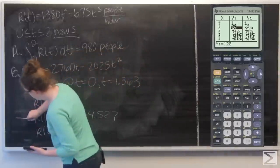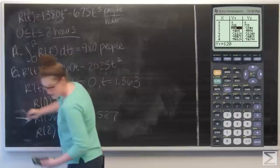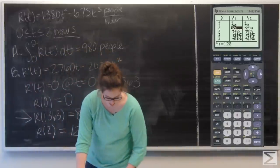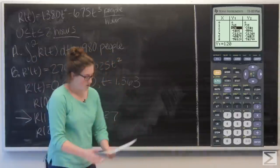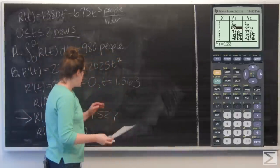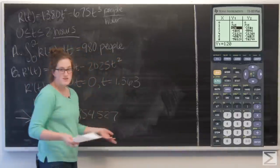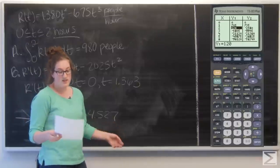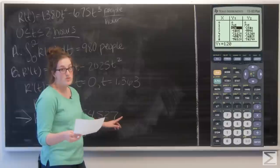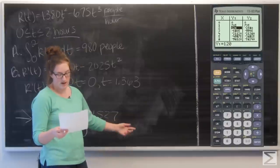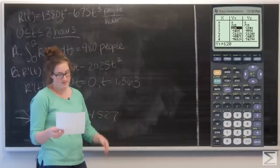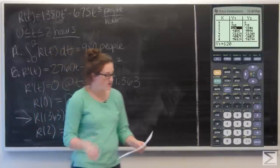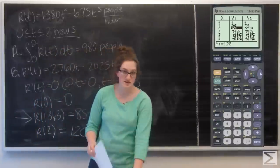r of 1.363 is the greatest of all three values. The maximum rate of people coming in occurs at t equals 1.363 hours. Let's move on to Part C.